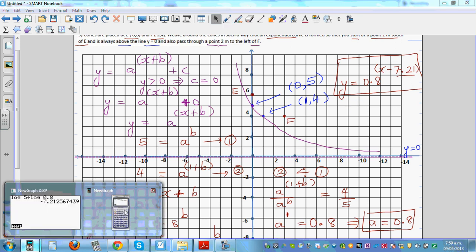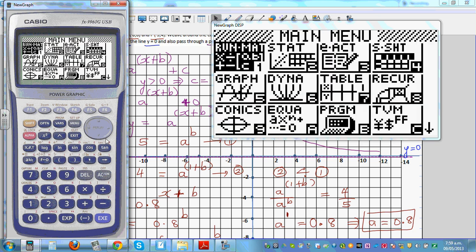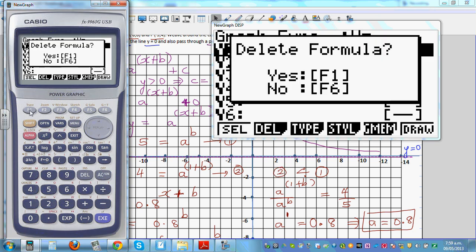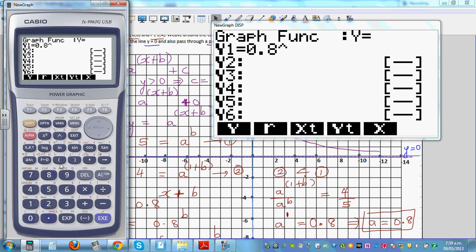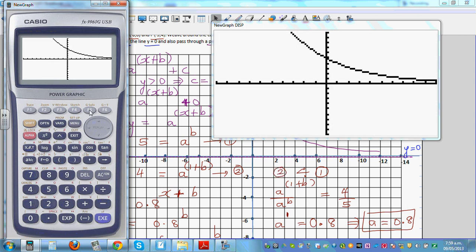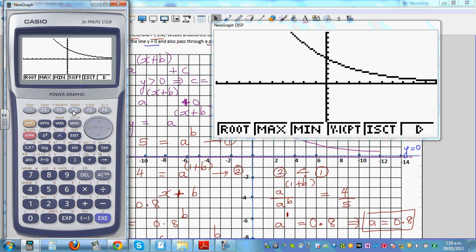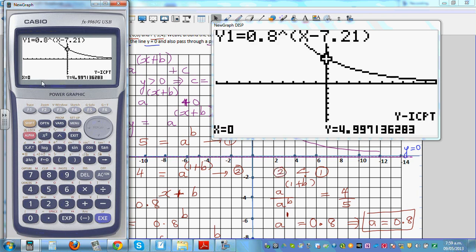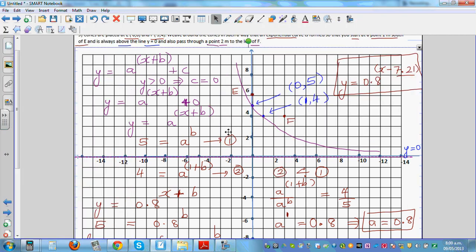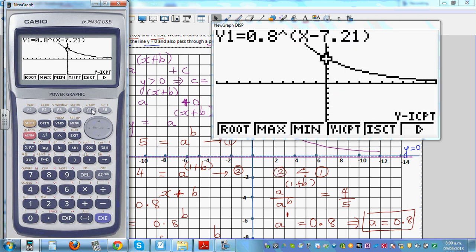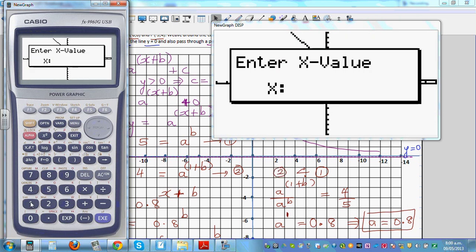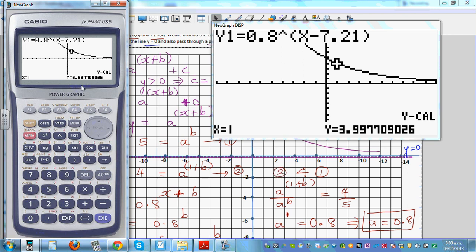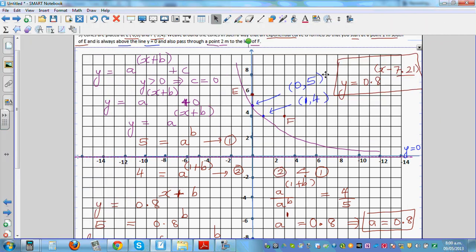So let us confirm the answer. Go to graph and type in the equation 0.8 raised to bracket x minus 7.21, close the bracket. And here is the curve. G-solve and y-intercept, this is almost 5, it's 0 comma 5. And when x is 1, y should be 4. G-solve, when x is 1, y should be about 4, and this is 4. So our equation is right.